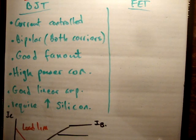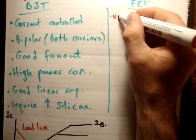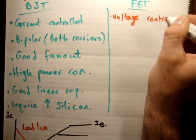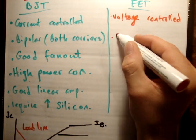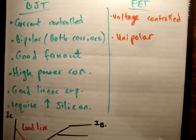I'm going to contrast that with the FET in a moment. So in our FET, I'm going to do this in red. This one is voltage controlled. It's unipolar, so it just uses negative electric charge.